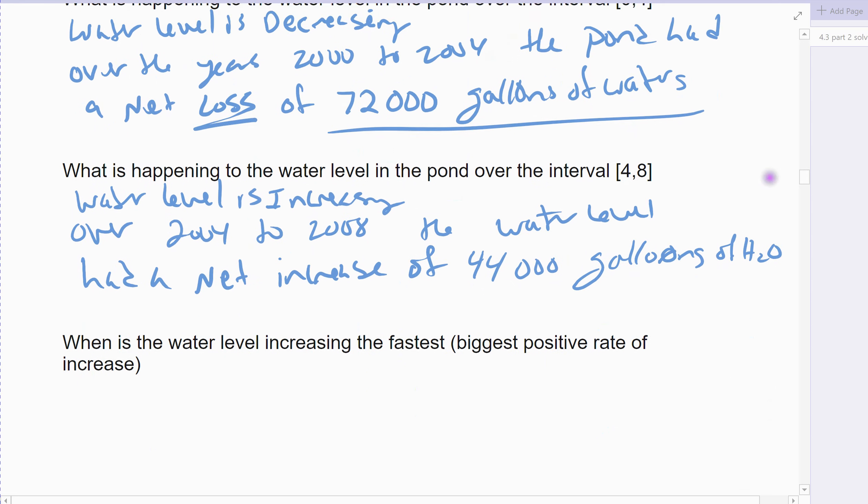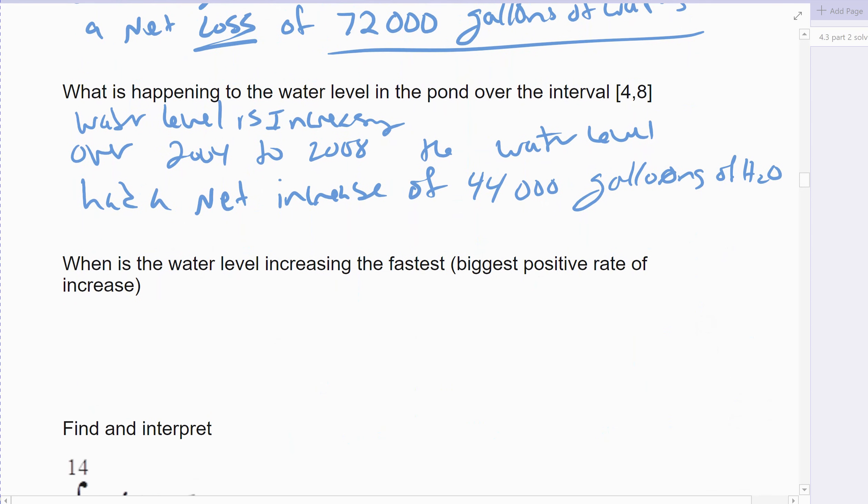Alright, the next question. When is the water level increasing the fastest? The biggest positive rate of change. So when was the rainiest season? What year was the water level increasing, growing the fastest?